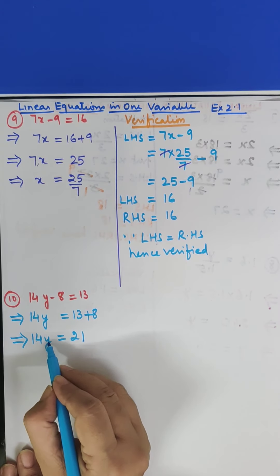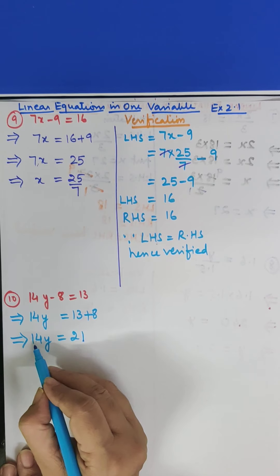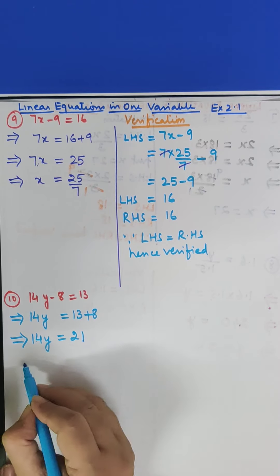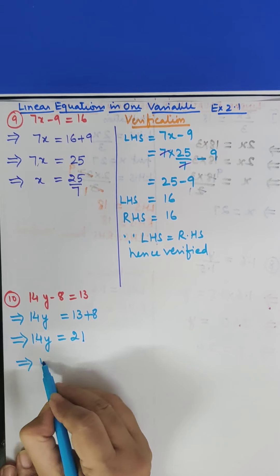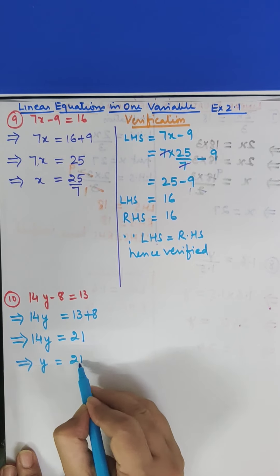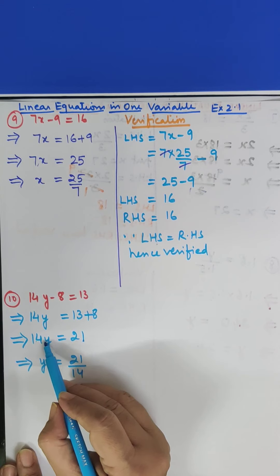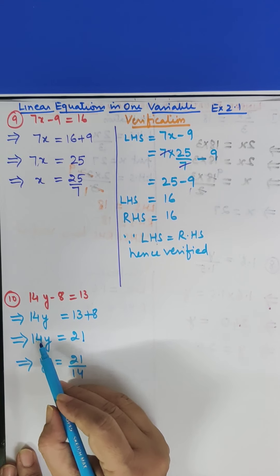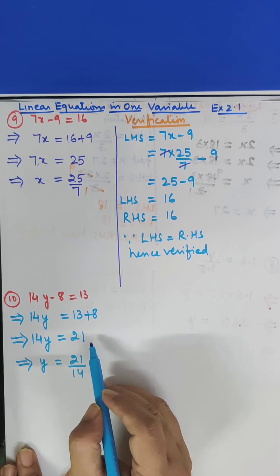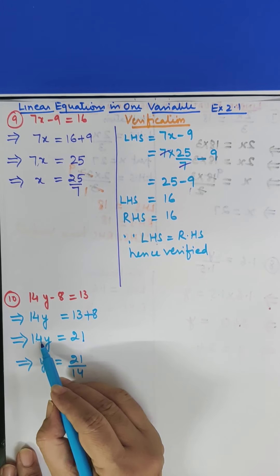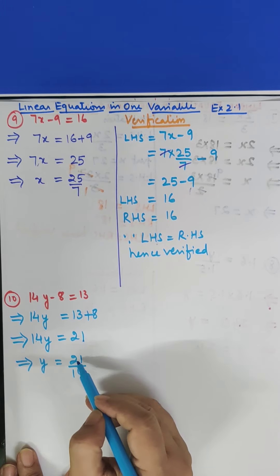14Y means 14 into Y. So if we remove 14 and bring it to this side, what will happen? It will become division. So Y is equal to 21 upon 14. Why division? Because it was 14 into Y, multiplication. So when we change side, sign also changes. So this multiplication will become division on this side. So we have 21 upon 14.